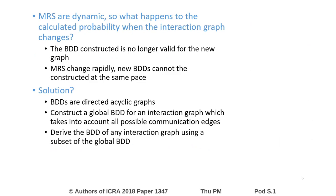One major challenge we had to overcome is the dynamic nature of multi-robot systems. We cannot afford to create a binary decision diagram each time the interaction graph of the multi-robot system changes. So, we propose to construct a single global BDD and to derive all the other needed BDDs using subgraphs of the global BDD. This approach is possible since BDDs are trees.